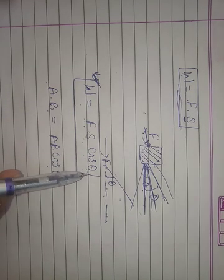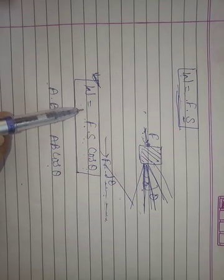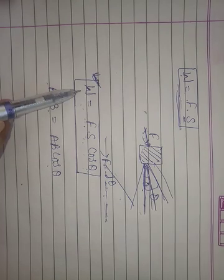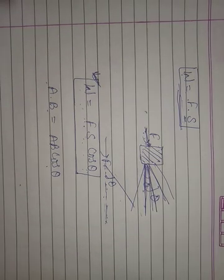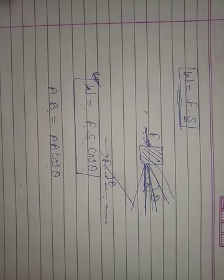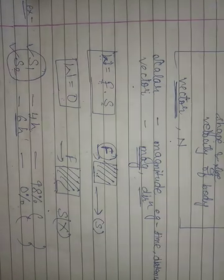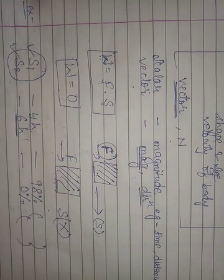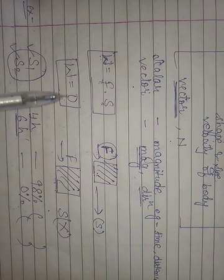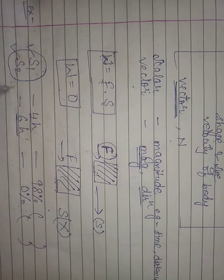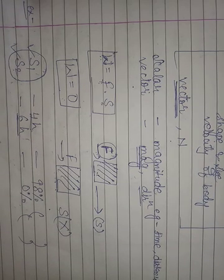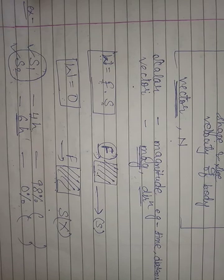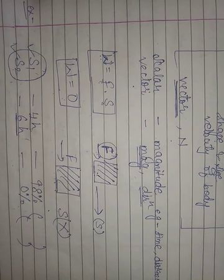In our next class, we will mathematically derive the formula for work done. Until then, revise your notes and write down the answer to the question about which student was really doing work according to physics. The rest we will cover in the next class. Thank you.